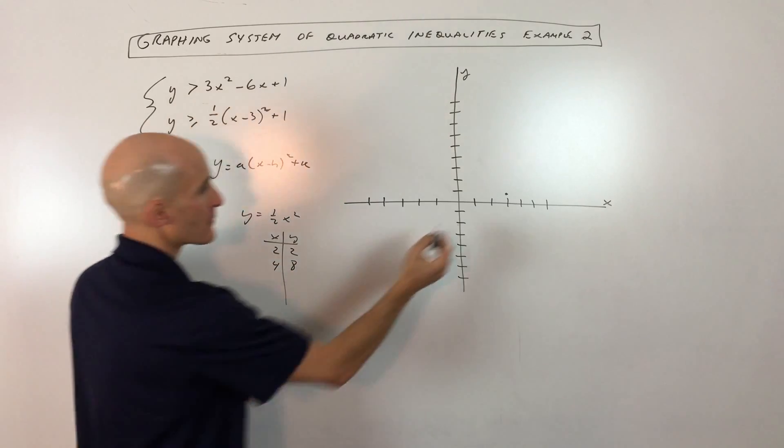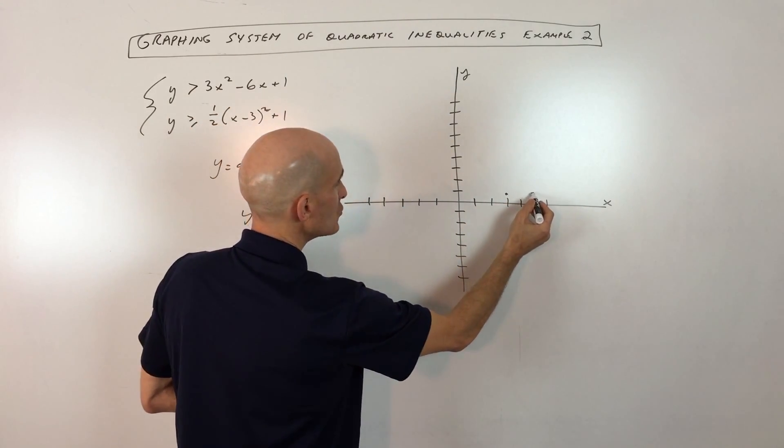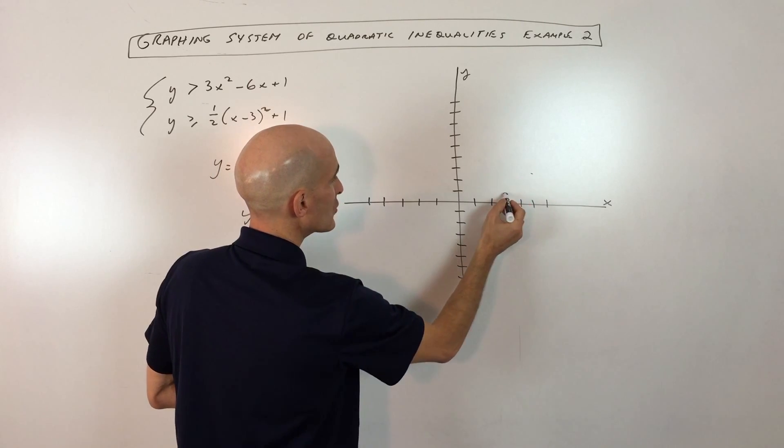So if we plot a couple points here from the vertex, we've got 2, 2. So I'm going right 2, up 2. And you can also go the other direction.